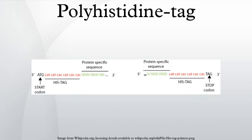Hexahistidine-chelate-dye tags have also been developed. These use nickel-covalent coordination to EDTA groups attached to fluorophores in order to create dyes that attach to the polyhistidine tag. This technique has been shown to be effective for following protein migration and trafficking, and may also be effective for measuring distance via fluorescence resonance energy transfer (FRET).